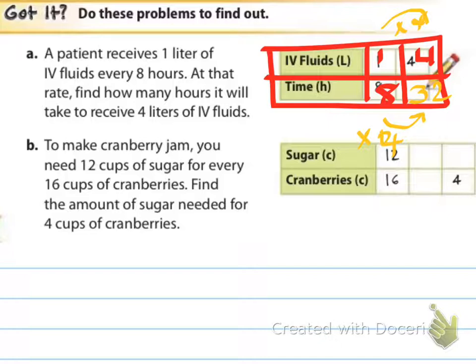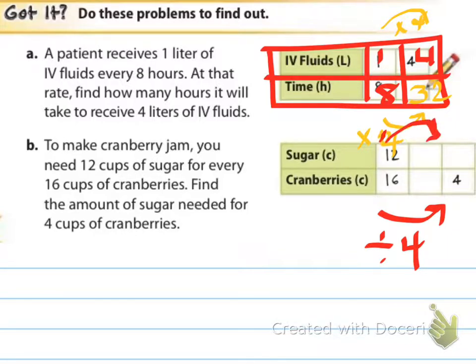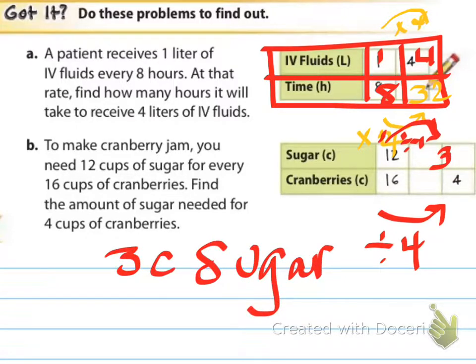On your table, you had 12 over 16 for the sugar-to-cranberry ratio, and we're trying to figure out how much sugar we need for four cups of cranberries. We were at 16 cups, now we're at four cups. To go from 16 to four, I can just divide by four — I don't need that middleman. Whatever I do the bottom, I do the top. So 12 divided by four gives us 3. Hopefully your answer was three cups of sugar — that's where you should have landed.